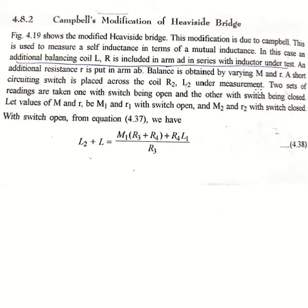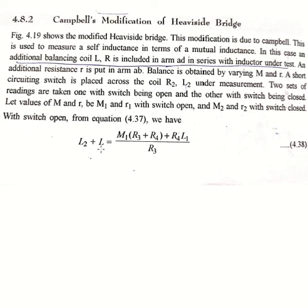Two sets of readings are to be taken in this AC bridge. When the switch is open, we take the values M1 and small r1, and when the switch is closed, we take the values M2 and r2. From the previous equation for L2 from the Heavyside bridge — since L is added in series with L2 — we directly have L2 plus L, which equals M1 multiplied by (R3 plus R4) plus R4·L1 divided by R3. This equation is directly from the Heavyside AC bridge diagram.